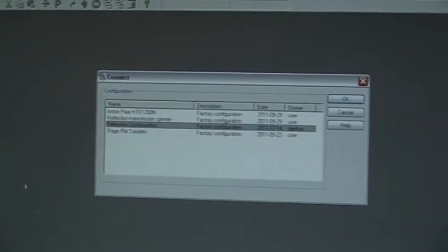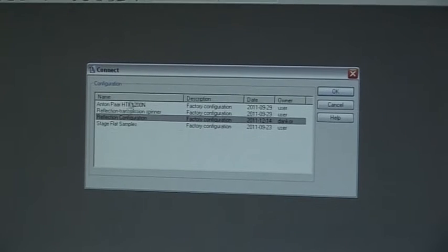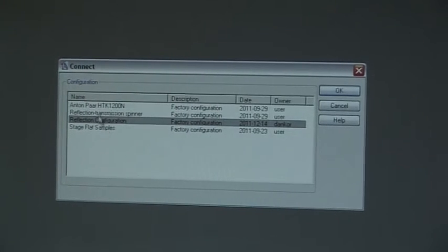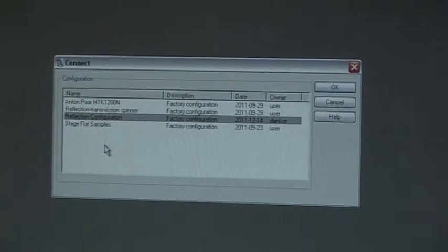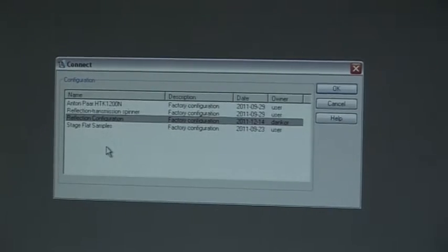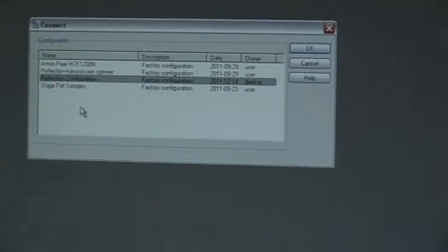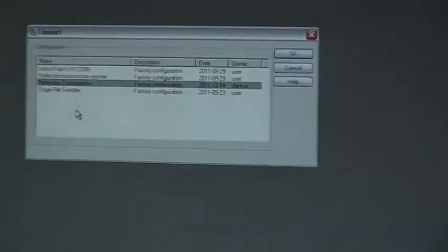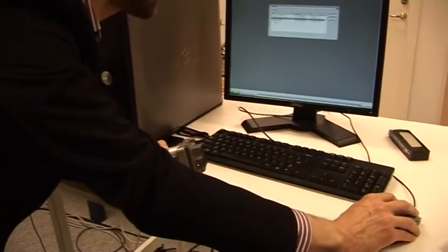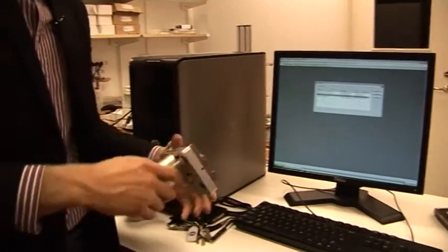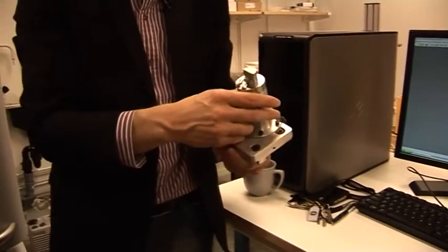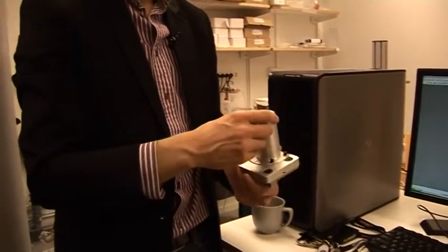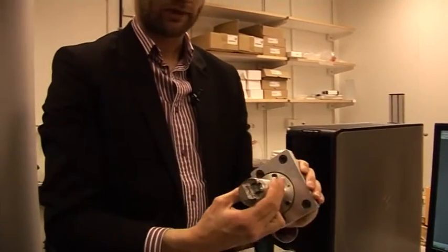The first thing we should do is to connect the instrument to the computer. When we press that we usually get some sort of choices, and the choices are different sample stages that we can use. For instance here, this last one, stage flat samples, looks like this. It's the most simple sample stage you can get in this machine and it's only used for flat samples.